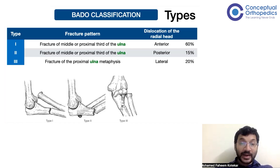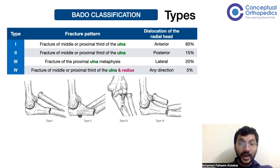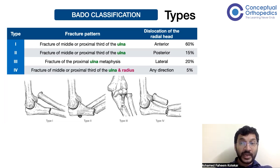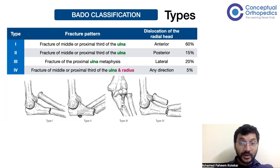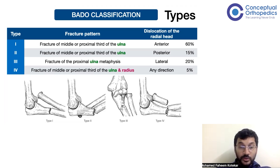Type 4 is a fracture of the proximal or middle third of both the ulna and the radius, with the radial head dislocating in any direction. Most commonly in Type 4 the radial head dislocates anteriorly, but any direction of radial head dislocation can be anticipated in Type 4 injuries.